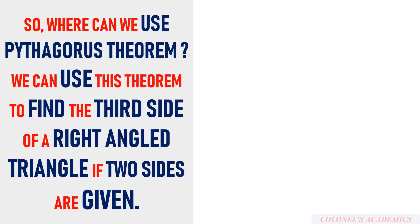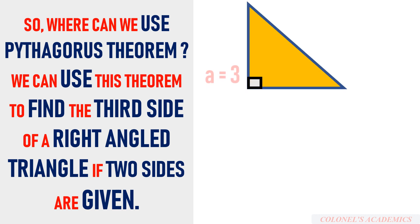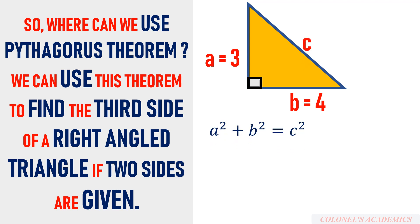We can use this theorem to find the third side of a right-angled triangle if two sides are given. Suppose we have a right-angled triangle with side a equal to 3 and side b equal to 4. We need to find side c, that is the hypotenuse. Since we know that the Pythagorean theorem gives a² + b² = c², we write 3² + 4² = c².